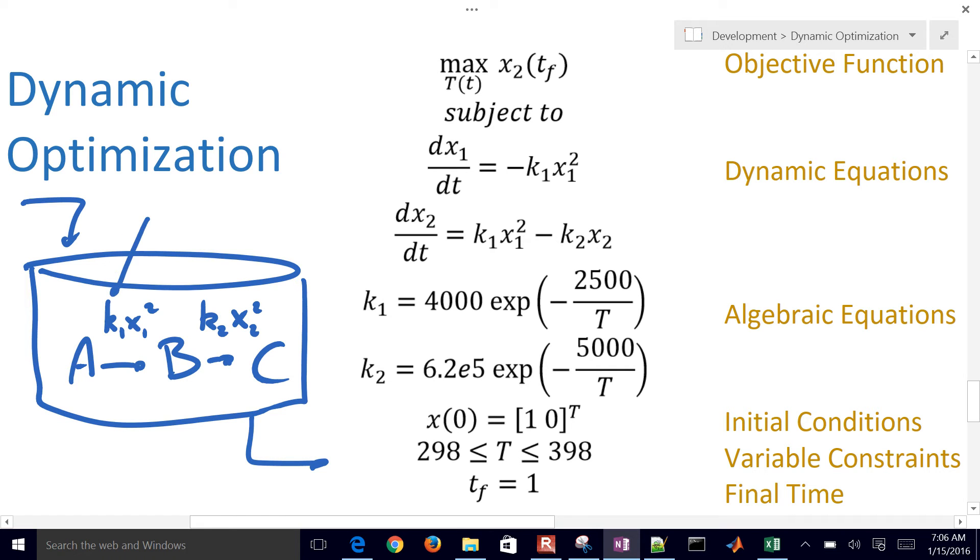We're going to see that the K value, K1, depends on temperature with an Arrhenius-like expression. So as the temperature increases, the reaction rate is going to increase exponentially.